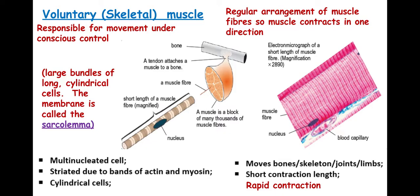First, let's look at voluntary or skeletal muscle. This is responsible for movement under conscious control — for example, the movement of your arm. As you can see in this image, it is striated and multinucleate, with several nuclei within a cell due to the bands of actin and myosin. The cells are cylindrical in shape, involved with moving the skeleton, bones, joints, or limbs, and it has a very short, rapid contraction.